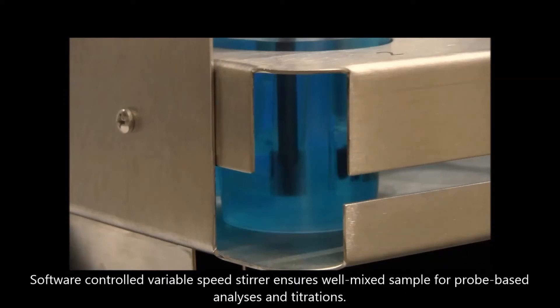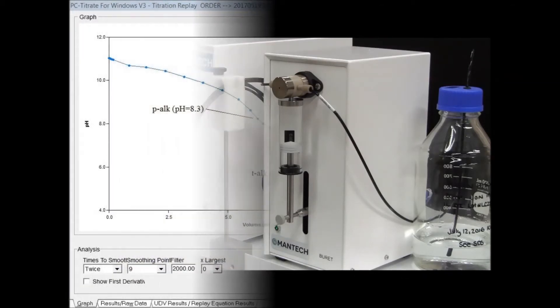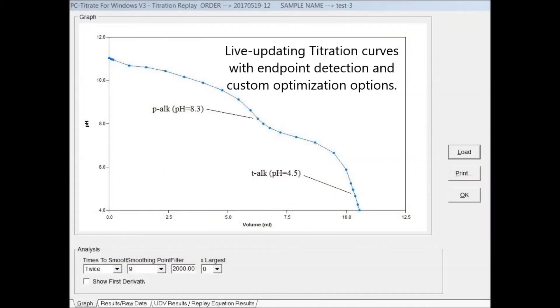A high-speed stirrer ensures a well-mixed sample for probe-based analyses and titrations. Mantec's 94,000-step burette drive performs highly accurate titration injections. Live updating titration curves with endpoint detection and custom optimization options are available.